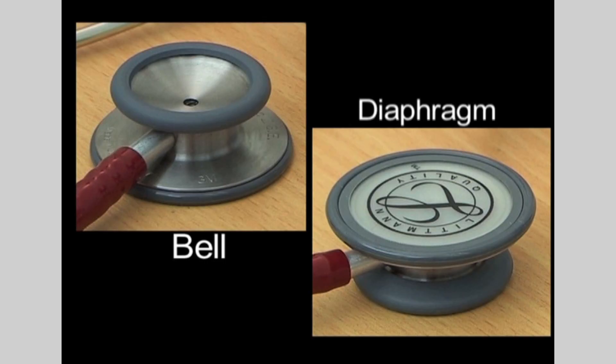The next step in the cardiovascular assessment is to listen to the heart — this is called the auscultation stage. Your stethoscope has two contact sides: the broader diaphragm and the hollow bell. The diaphragm is best used for high-pitched sounds and the bell for low-pitched sounds.